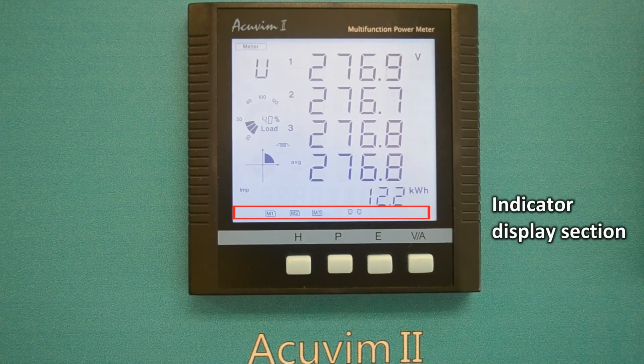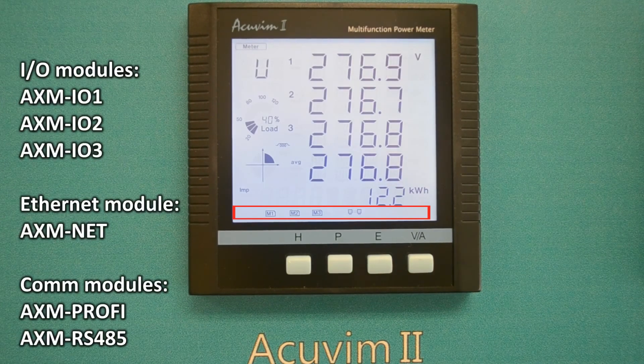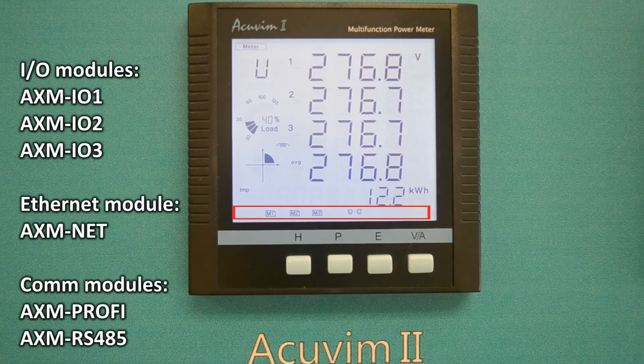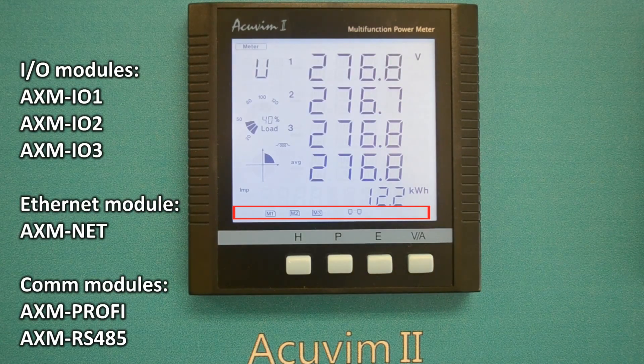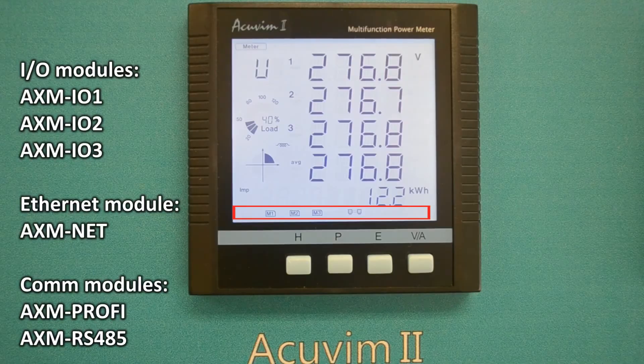In the indicator display section, you will find the I.O. and communication icons for our AXM I.O.1, I.O.2, and I.O.3 modules, as well as our AXM-NET Ethernet module.